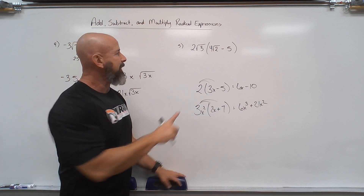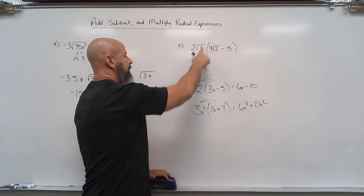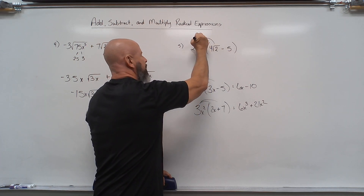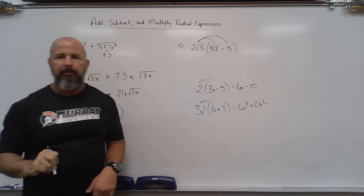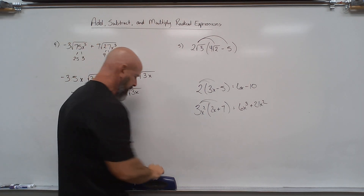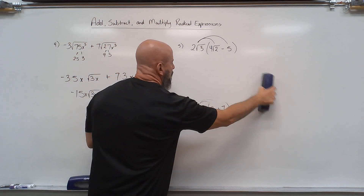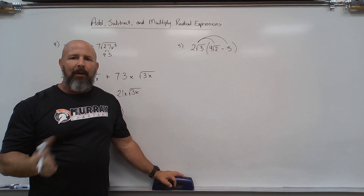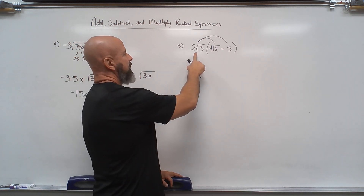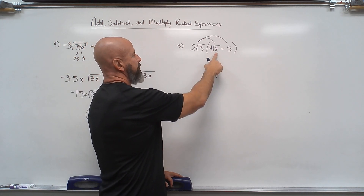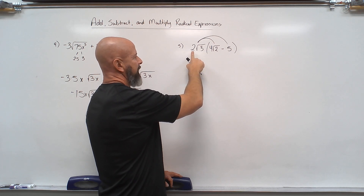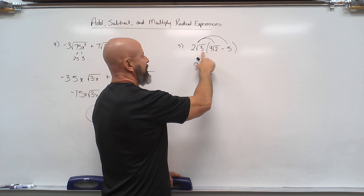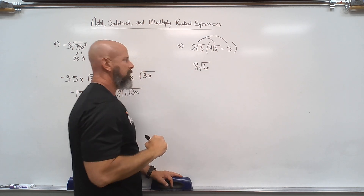When we're multiplying with radicals, what we want to remember is inside with inside and outside with outside. So when I look at 2 root 3 times 4 root 2: outside with outside is 2 times 4 equals 8, and inside with inside is 3 times 2 equals 6, so I'd have 8 root 6.